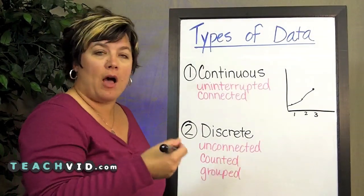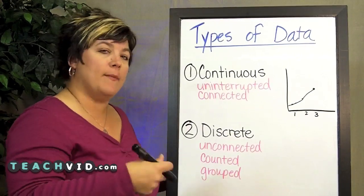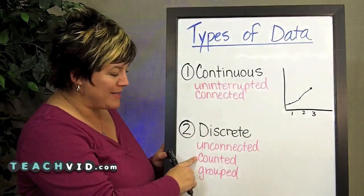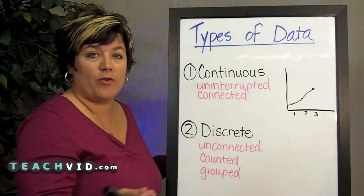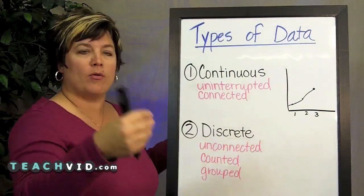So for each one, I would count how many students like cheese, how many like pepperoni. So I'm counting my data. Those data bits are not connected to one another. They're separate. The cheese, the pepperoni and so forth.